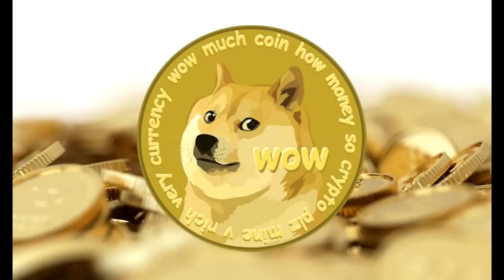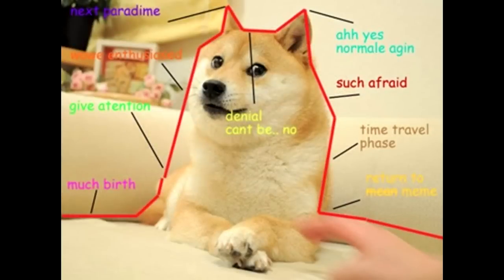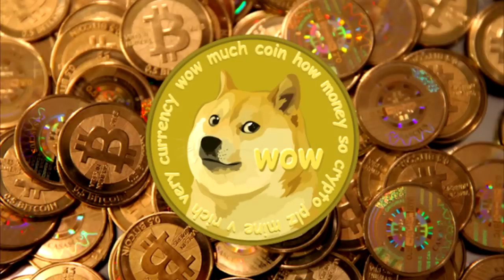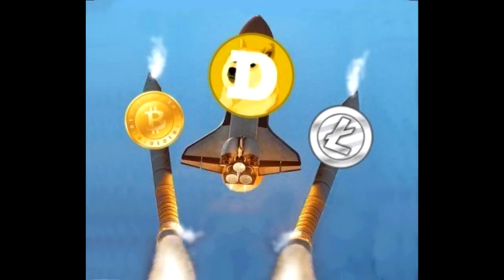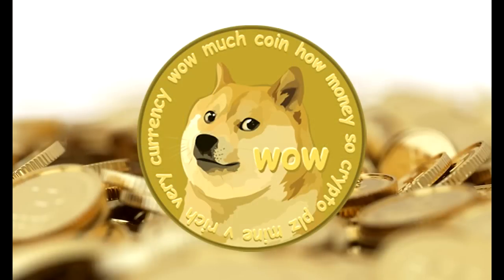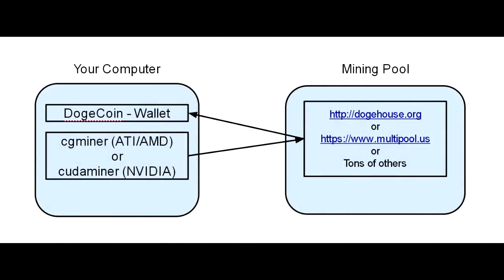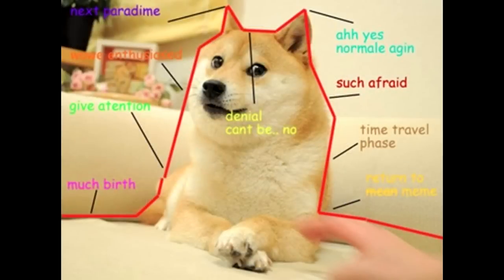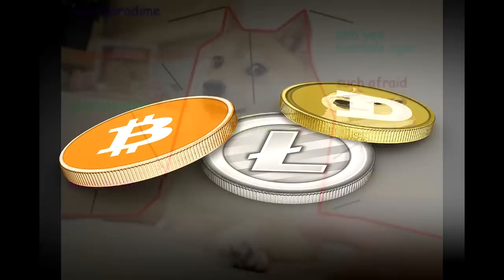The auto-withdrawal is kind of fun — you'll just be sitting there and all of a sudden the threshold is hit and you'll get a notification in your system tray saying you just received 1,000 Dogecoins from your mining pool. So that's basically it. This is oversimplified — I'm not going into command line parameters for the mining programs because better tutorials exist. But hopefully now you have that big picture of how everything fits together, so when you read tutorials you'll know what they're talking about and won't be going in blind.